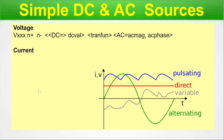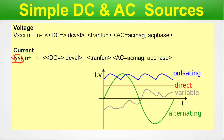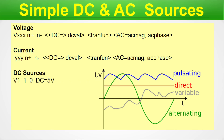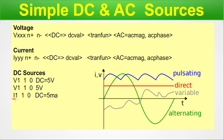For current, the syntax starts with I followed by an alphanumeric identifier, then plus node and minus node, and the DC value of the current. If there is AC coupled with the DC source, that must be mentioned — the magnitude goes here and the phase goes here. Example: V1 connected between node 1 and 0 with a DC value of 5V — this is a pure DC source with no AC component. Similarly, I1 is a current connected between node 1 and 0 with a DC value of 5 mA.